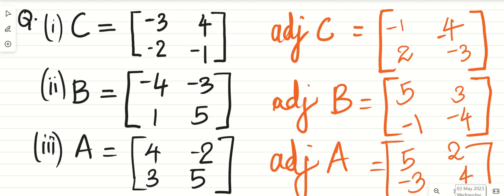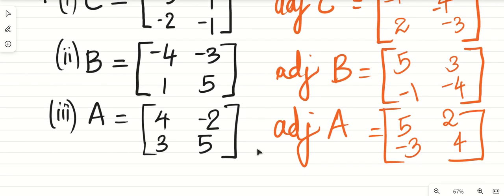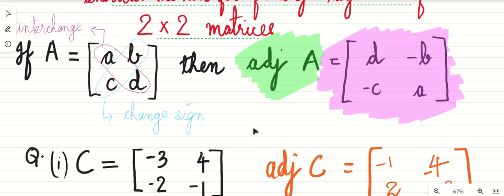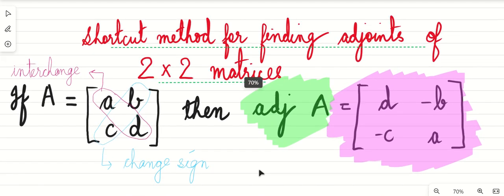I hope this is clear. This is a very simple concept - you don't have to work hard to find the adjoint for a 2 by 2 matrix. This can only be used for 2 by 2 matrices. For other order matrices, you will have to follow the usual steps: find the determinant, find the cofactors, form the cofactor matrix, then find the adjoint of A. That is how it is done.